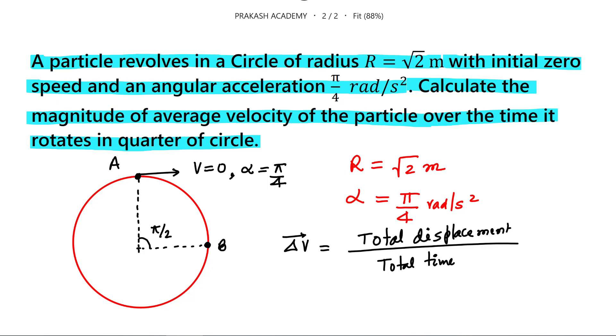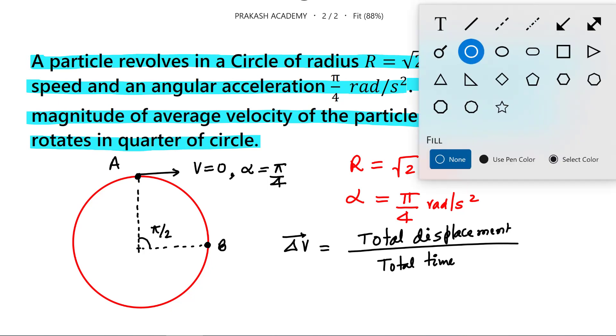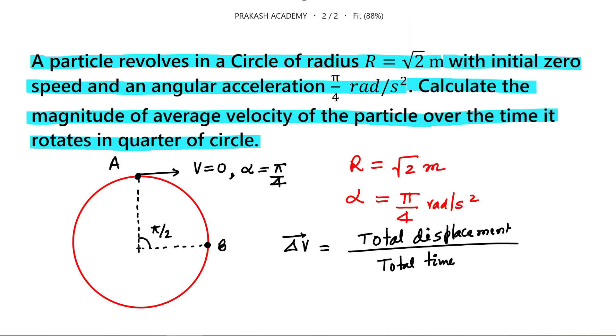So what is this displacement in this case? This displacement in this case is from here to here, this is the displacement. And if this distance is r and this distance is r, then this distance will be root 2r. So now the upper part I know. What is the total time? This we can also calculate.